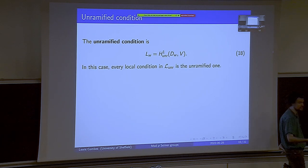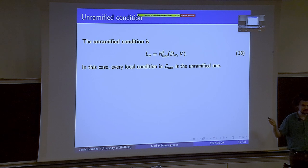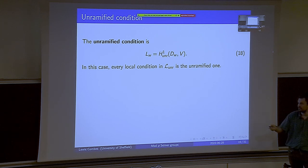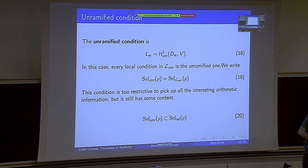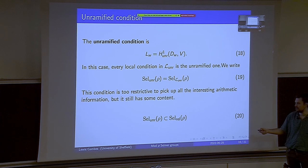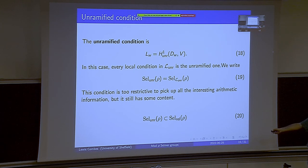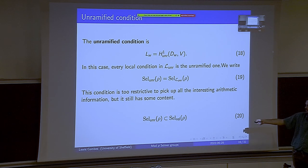The unramified condition sets every single place, even those over P, to be the unramified condition. This is too restrictive — it doesn't pick up everything we care about, but it still has some content. We write it as Sel_unr, and it sits inside our relaxed Selmer group, because the more restrictive the condition, the smaller the Selmer group.